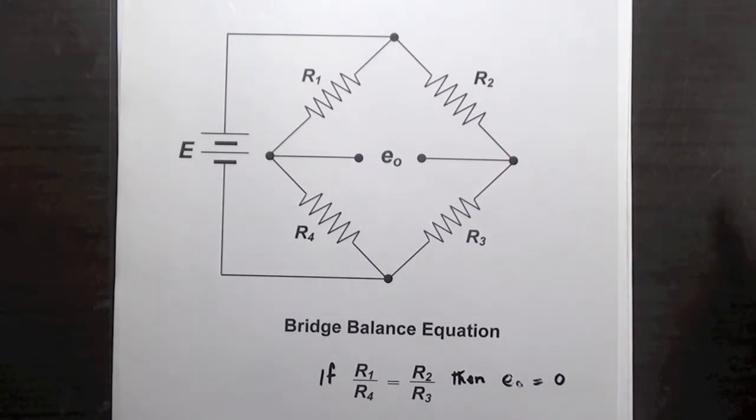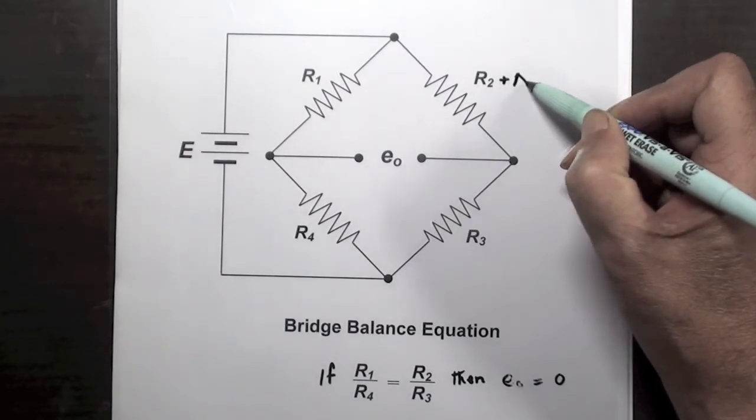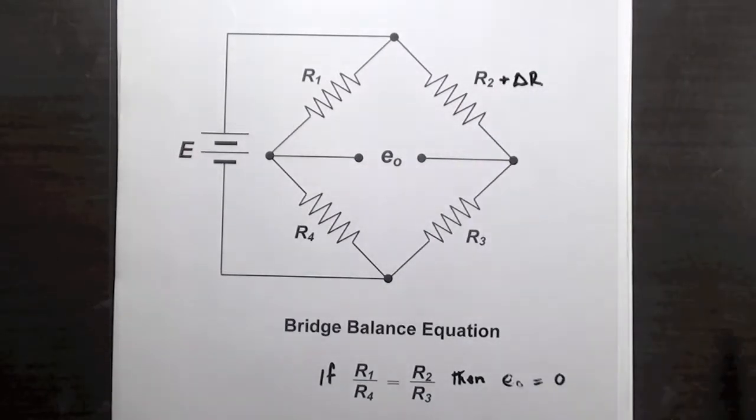When one of the resistances increases by a small amount, then the bridge is no longer balanced and E output will have a value, let us say E1. Here only a quarter of the bridge has changed resistance, and this is called a quarter bridge configuration.